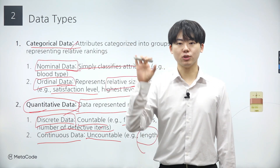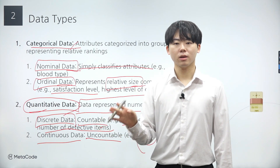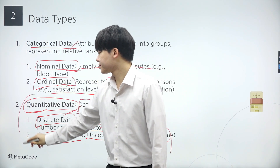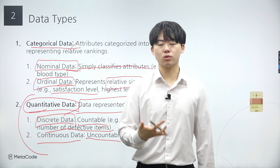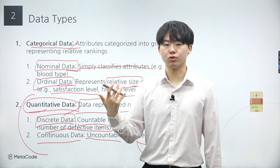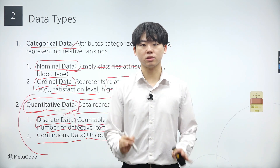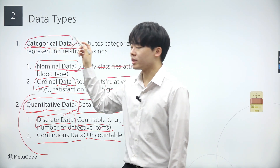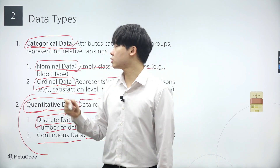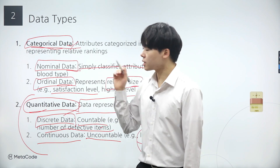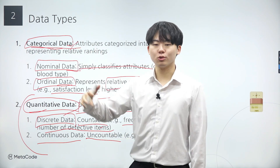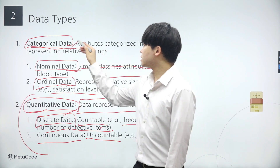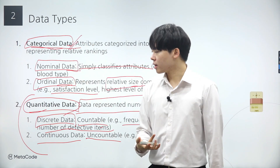Distinguishing between data types is crucial because the approach to data analysis varies significantly depending on the type of data. Most of the data we'll handle in this course, such as when practicing statistical inference, linear regression, hypothesis tests, and so on, will be quantitative data. However, delving into the analysis of categorical data, which we won't cover in this course, requires exploring a separate subfield with its own unique approach and methodologies. Ensuring accurate categorization of data is a crucial first step in applying the appropriate statistical analysis technique. Therefore, the ability to distinguish between different types of data is essential.